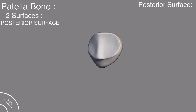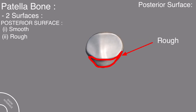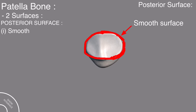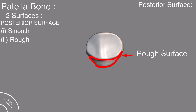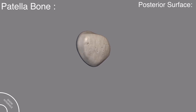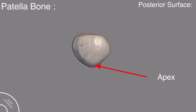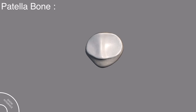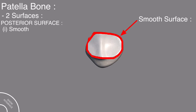The posterior surface has both smooth and rough surfaces. This is the smooth surface and this is the rough surface. This rough surface is opposite the apex, and through this you can easily identify the apex. This is the rough surface, and on the opposite side, this is the apex.